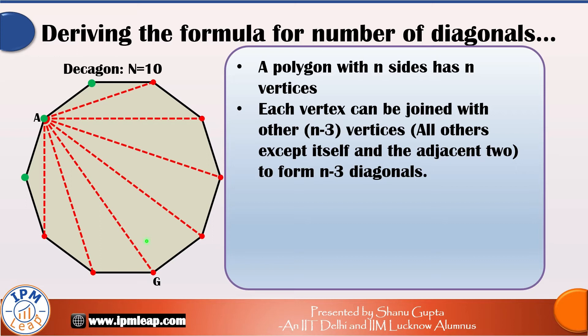But there is a catch here. Each diagonal gets counted twice in this scheme. For instance, if I take the diagonal AG, this diagonal gets counted when we were counting the diagonals originating from A and will get counted again when we are counting the diagonals originating from vertex G.